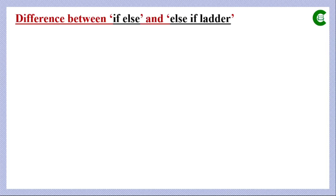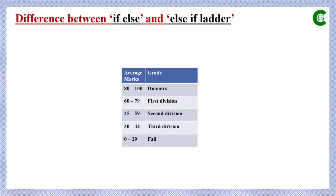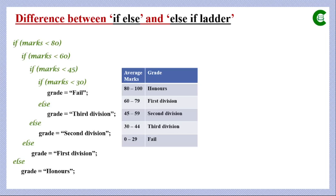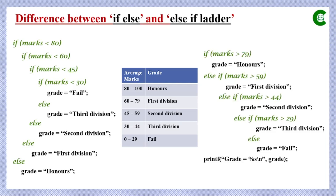Now we will see the difference between nested if-else and else-if ladder in the program. We have taken the same problem: the first set of program is for nested if-else and the second piece of program is for else-if ladder. The main difference is: in else-if ladder the next condition is checked when the previous condition is false, whereas in nested if-else the next condition is checked when the previous condition is true.